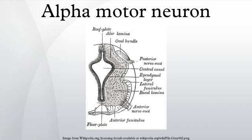Like other motor neurons, alpha motor neurons are named after the properties of their axons. Alpha motor neurons have Aα axons, which are large-caliber, heavily myelinated fibers that conduct action potentials rapidly. By contrast, gamma motor neurons have Aγ axons, which are slender, lightly myelinated fibers that conduct less rapidly.